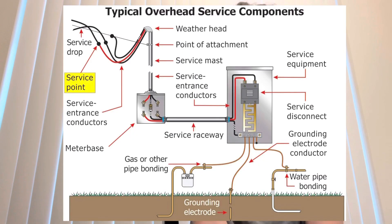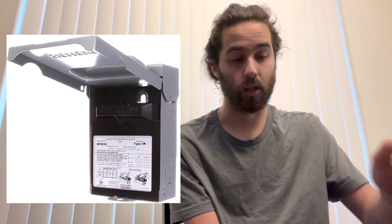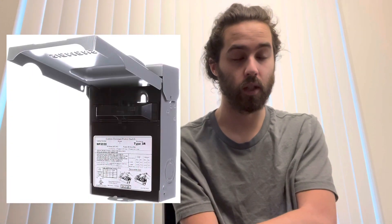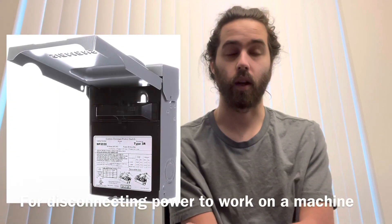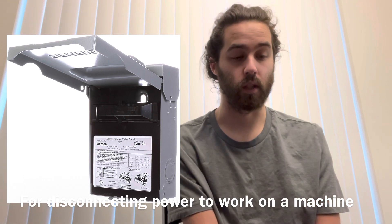Then you've got your meter, which is on the outside of the house. It's a box where the power company measures how much power is being used in the house. That usually takes a feeder in and then another outgoing feeder into the panel itself. Then you've got a disconnect, which is usually used in certain applications outside the house, like for an air conditioner — you'll have a little disconnect box.